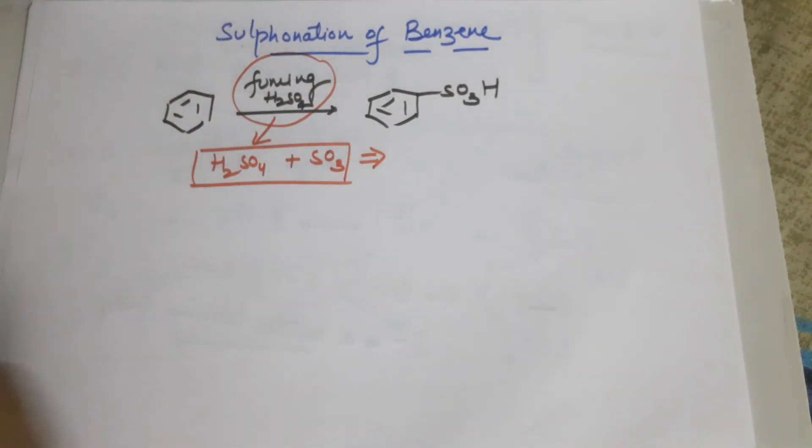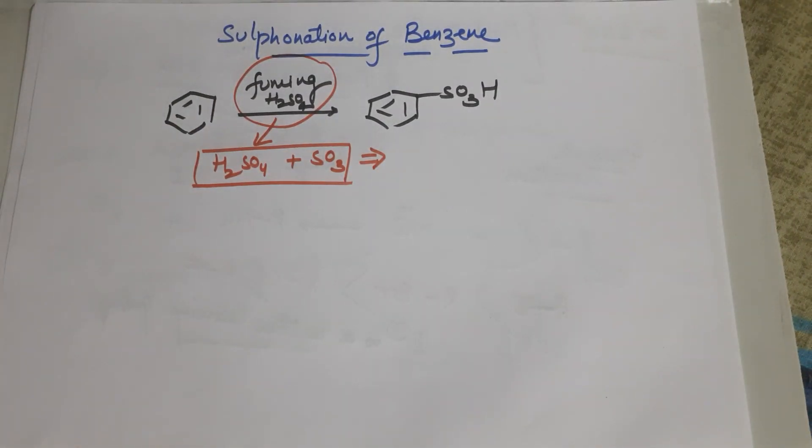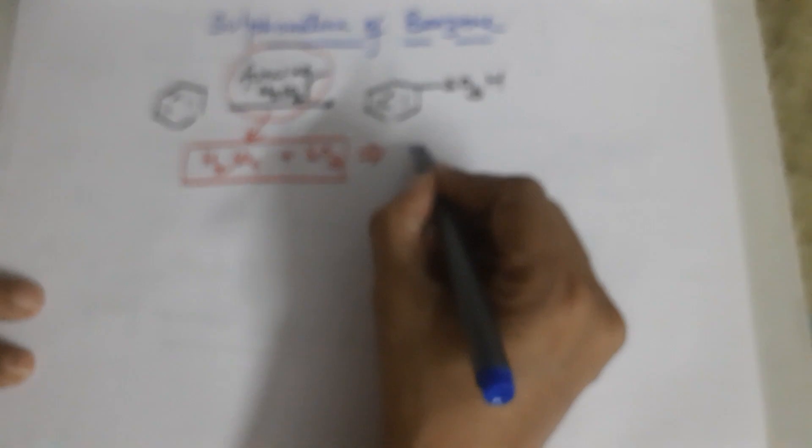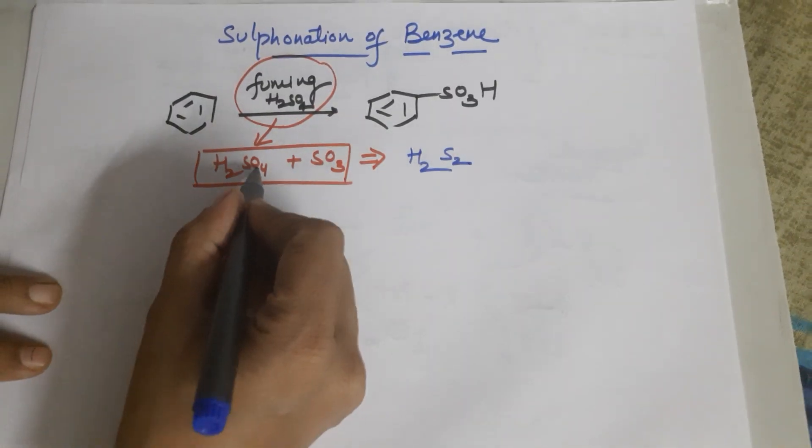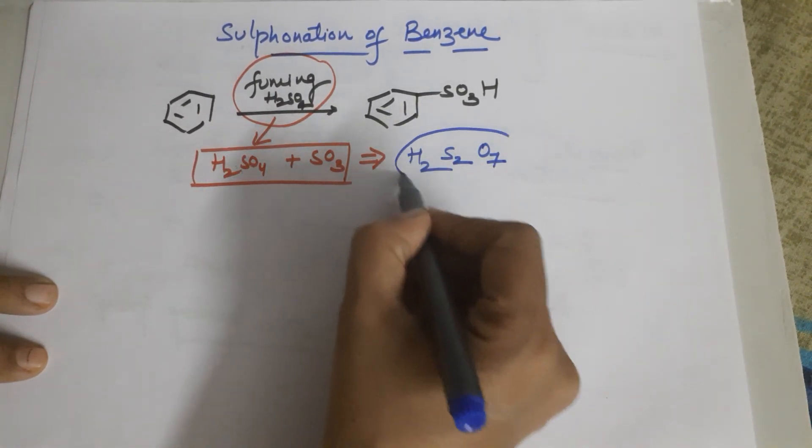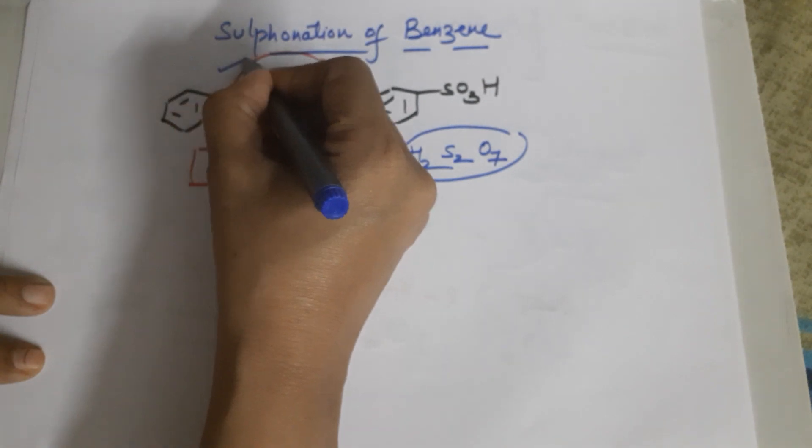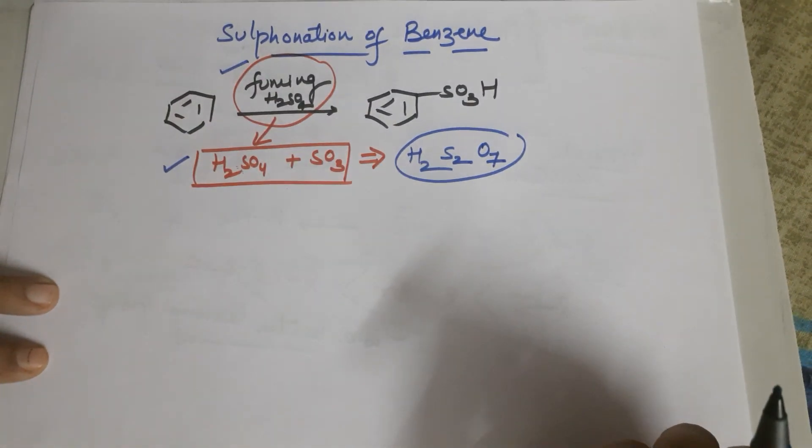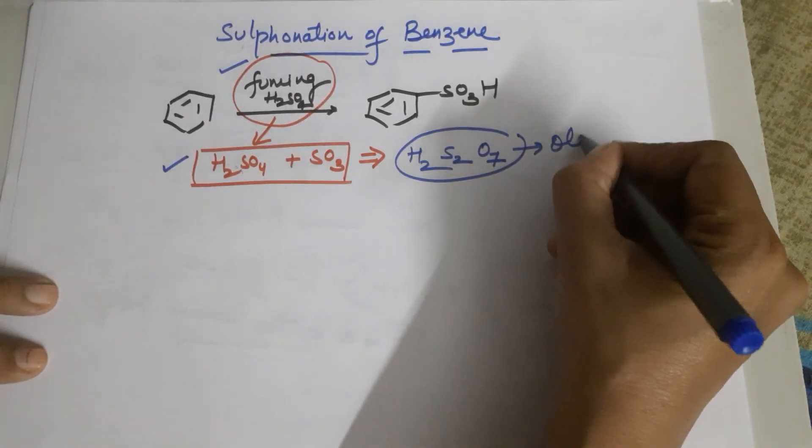Which actually can be written as H2S2O7. Add the 2, H2, S2 and O, how many? 4 plus 3 equals 7. So even if it is written this or it is written this, they all end up into the same thing. This is also called as oleum.